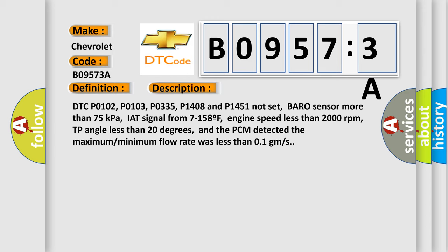Baro sensor more than 75 kilopascals, IAT signal from 7 to 158F, engine speed less than 2000 revolutions per minute, TP angle less than 20 degrees, and the PCM detected the maximum minimum flow rate was less than 01 GMS.